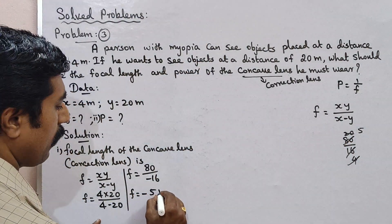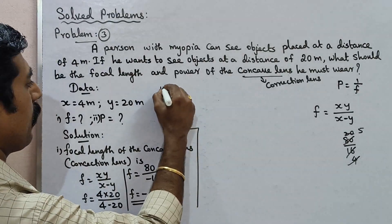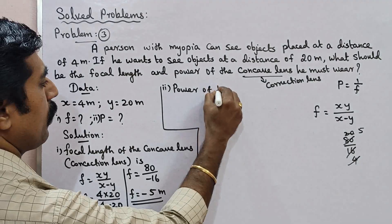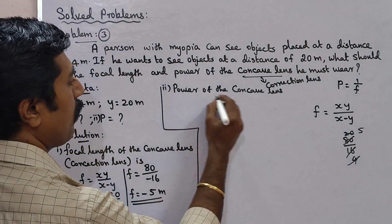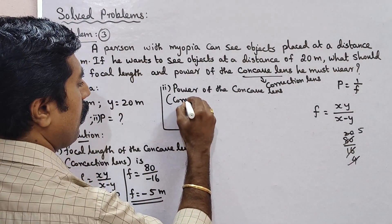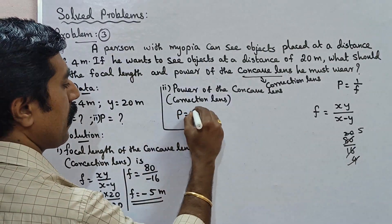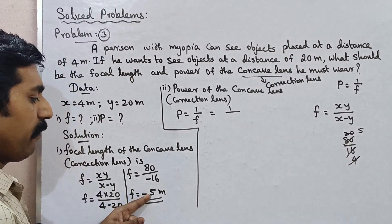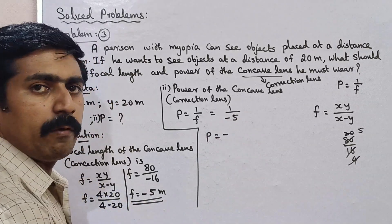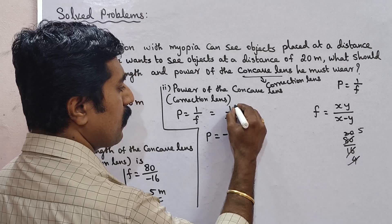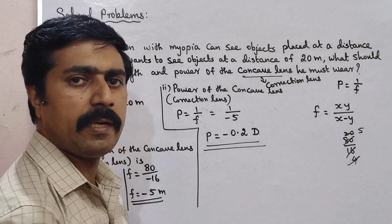So f equals minus 5 meters. The unit is meters — that is the focal length calculated. Next is the power of the concave lens. Power of lens is the reciprocal of focal length, which equals 1 divided by f, that is 1 divided by minus 5. So p equals minus 0.2 diopter.